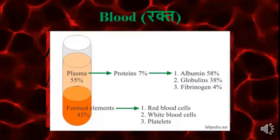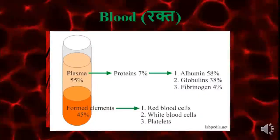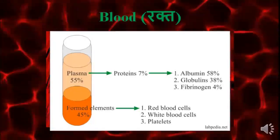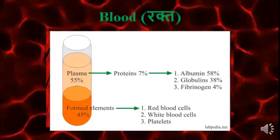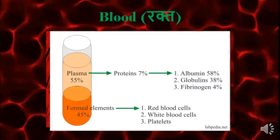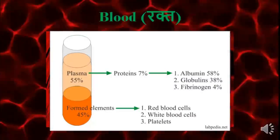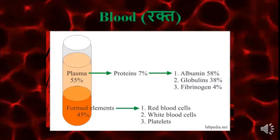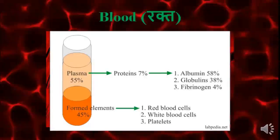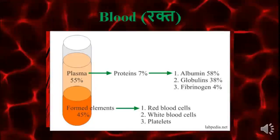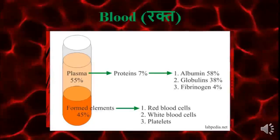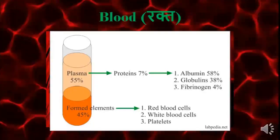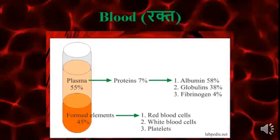Plasma is made up of proteins which are 7%, proteins like albumin, globulins, and fibrinogen. Each has a different function. Other elements like blood cells are made up of red blood cells, white blood cells, and platelets.